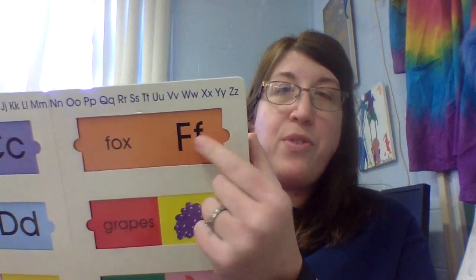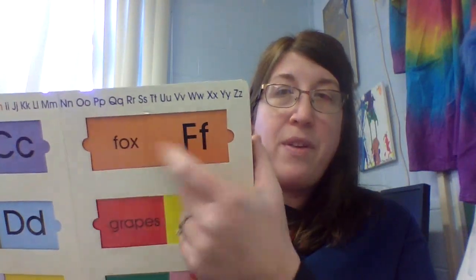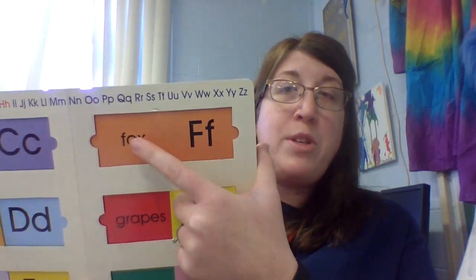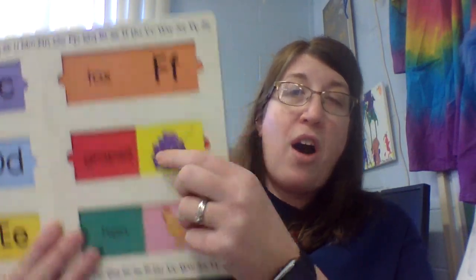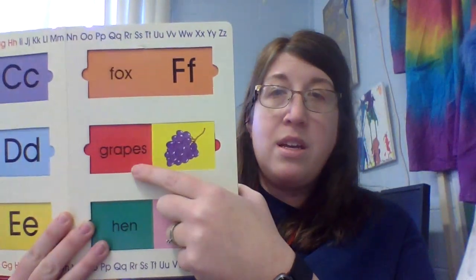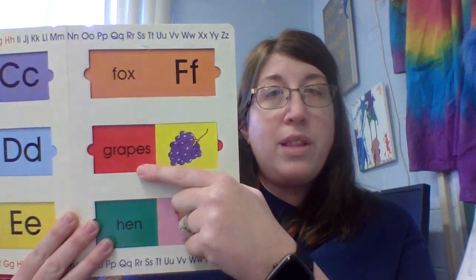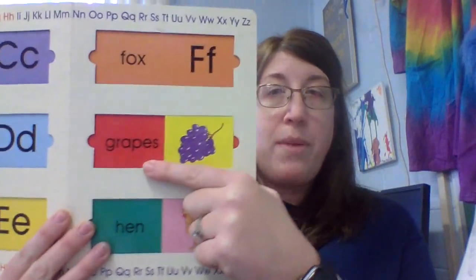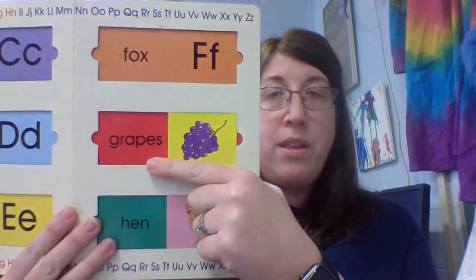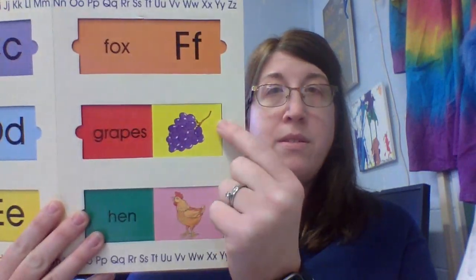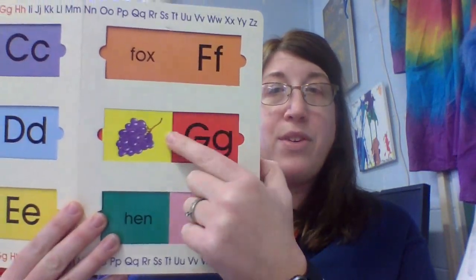So we have no slider for F, but it was a picture of a fox. Grapes. What letter does grape start with? Very good, a G.